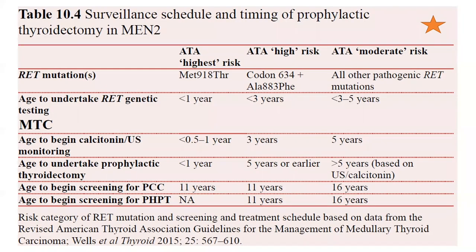An extremely important chart covers the MEN2 surveillance schedule, timing of prophylactic thyroidectomy, and screening for phaeochromocytoma and primary hyperparathyroidism. For the highest risk RET mutation — MET918THR — genetic testing should be done at less than one year of age, calcitonin and ultrasound monitoring should begin at less than 0.5 to one year, and prophylactic thyroidectomy should be undertaken at less than one year. Age to begin screening for phaeochromocytoma is 11 years; screening for primary hyperparathyroidism is not applicable.